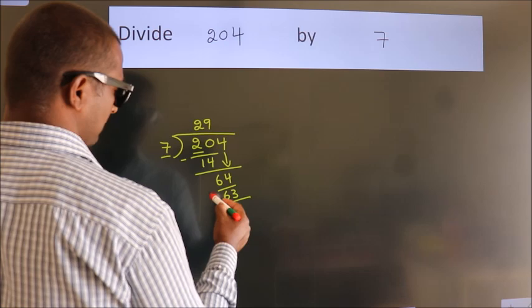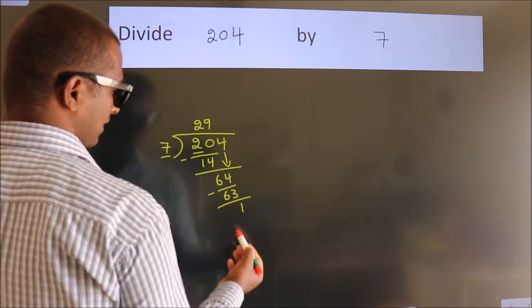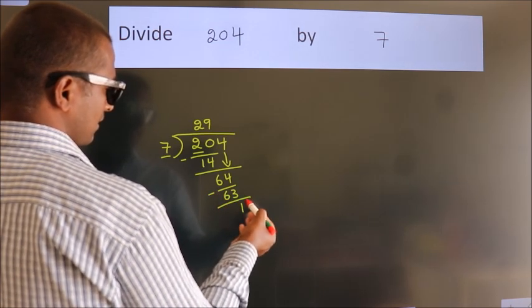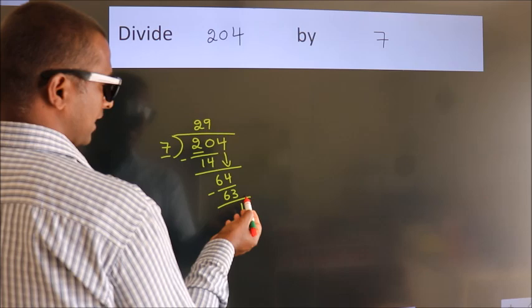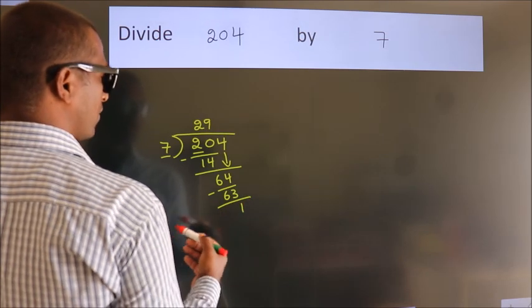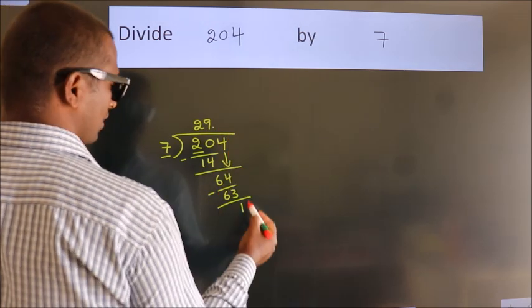Now we subtract. We get 1. After this, no more numbers to bring down. So what we do is we put a dot, take 0.